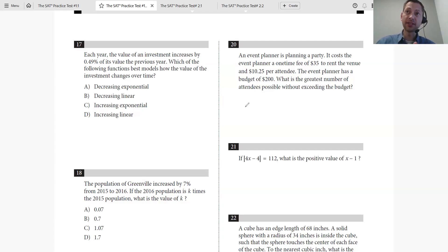$35 to rent the venue plus 10.25 times the number of attendees. If we say X is the number of attendees, then we have 35 plus 10.25X equals the total cost. I'm just writing it down, looking at one sentence at a time.